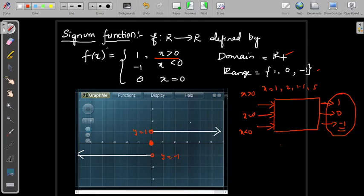Domain of signum function is R. Range is the set containing 1, 0, minus 1. And the graph is 1 towards the positive x-axis, minus 1 towards the negative x-axis, and for 0 it is 0.